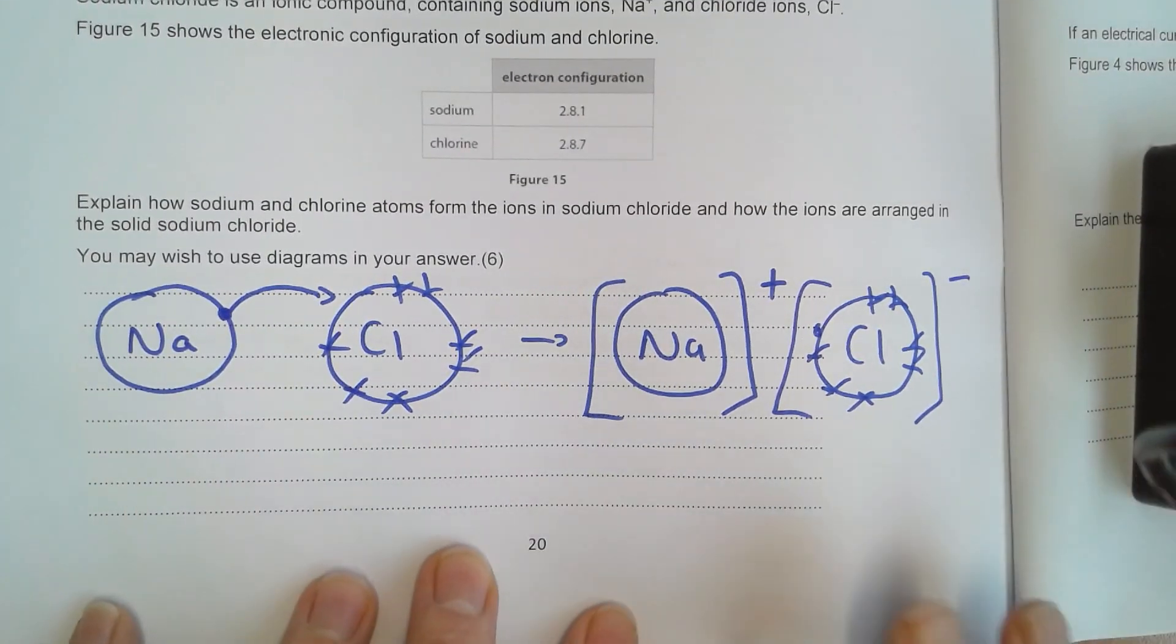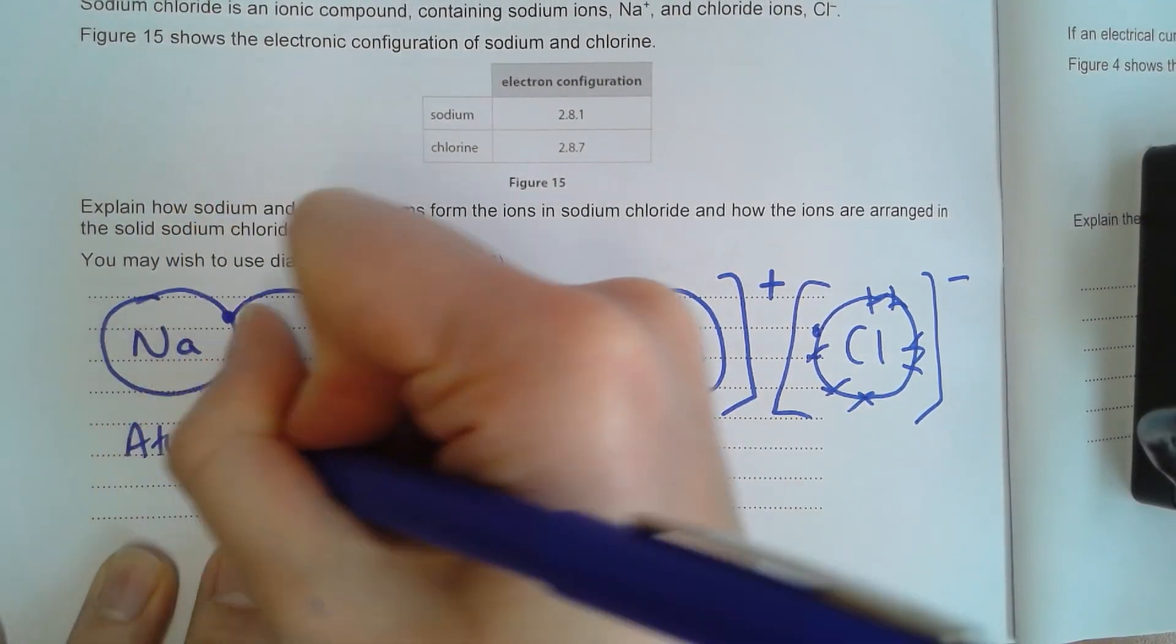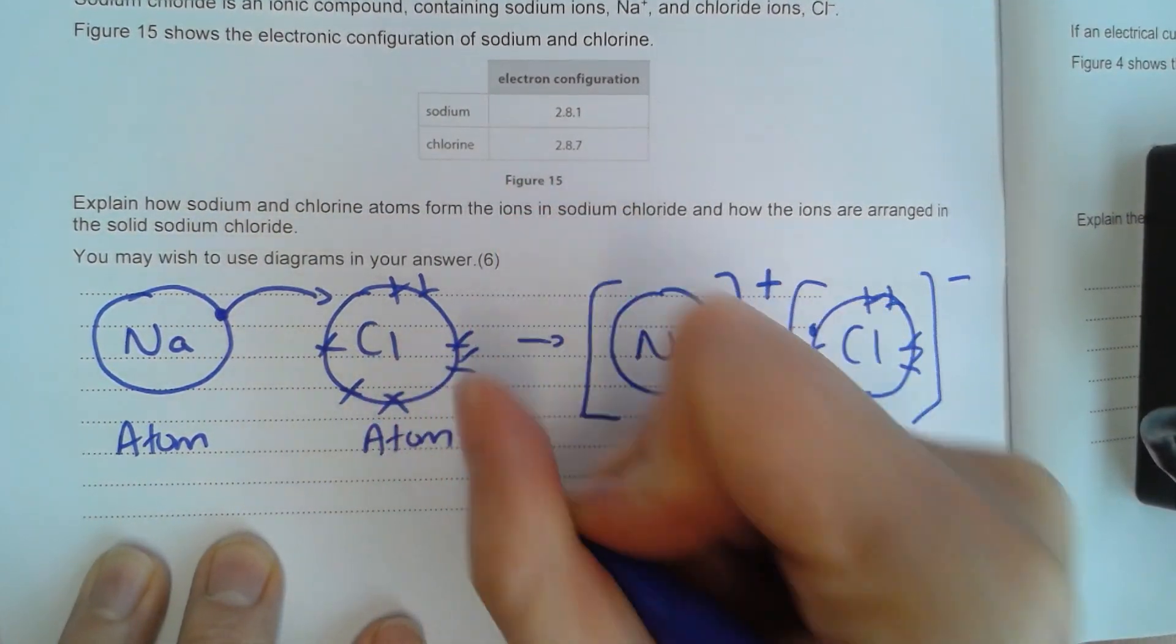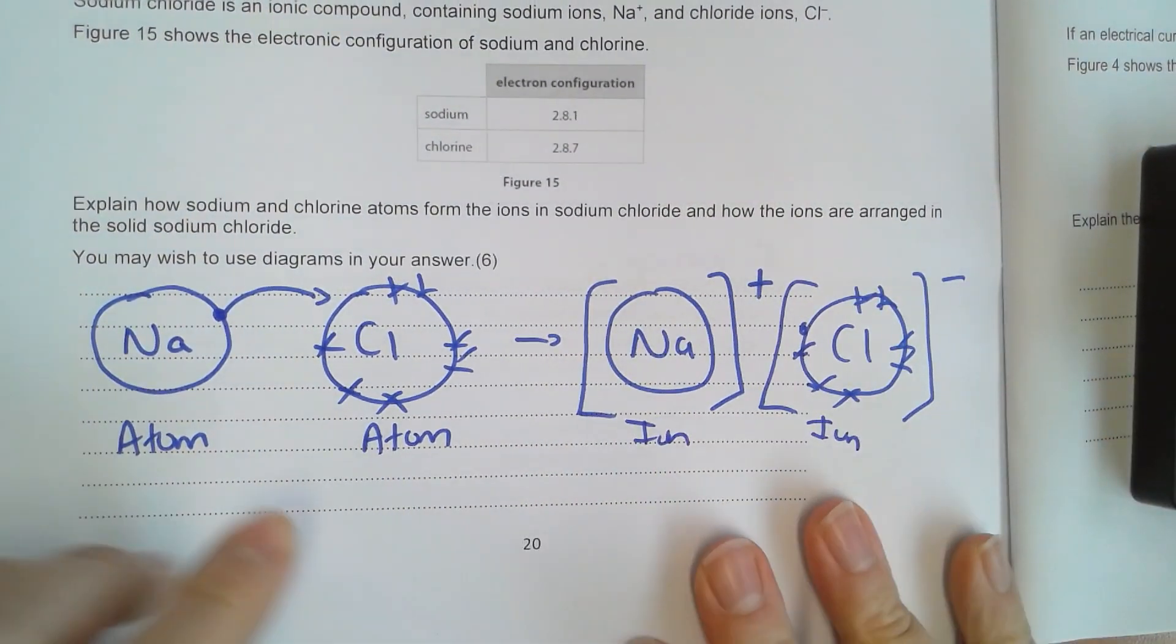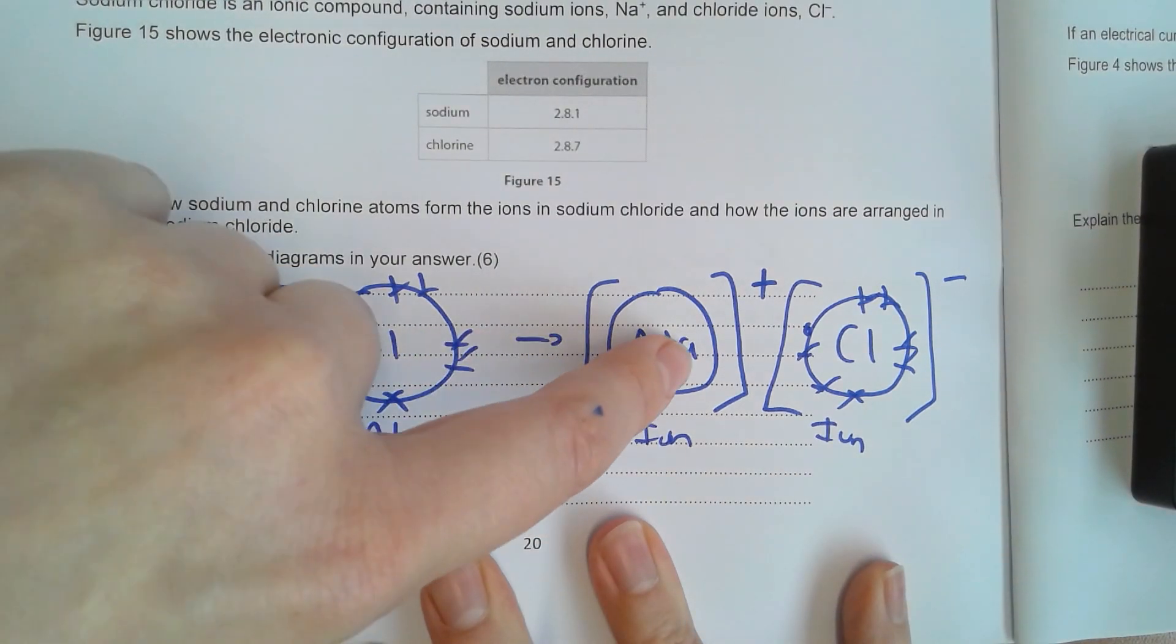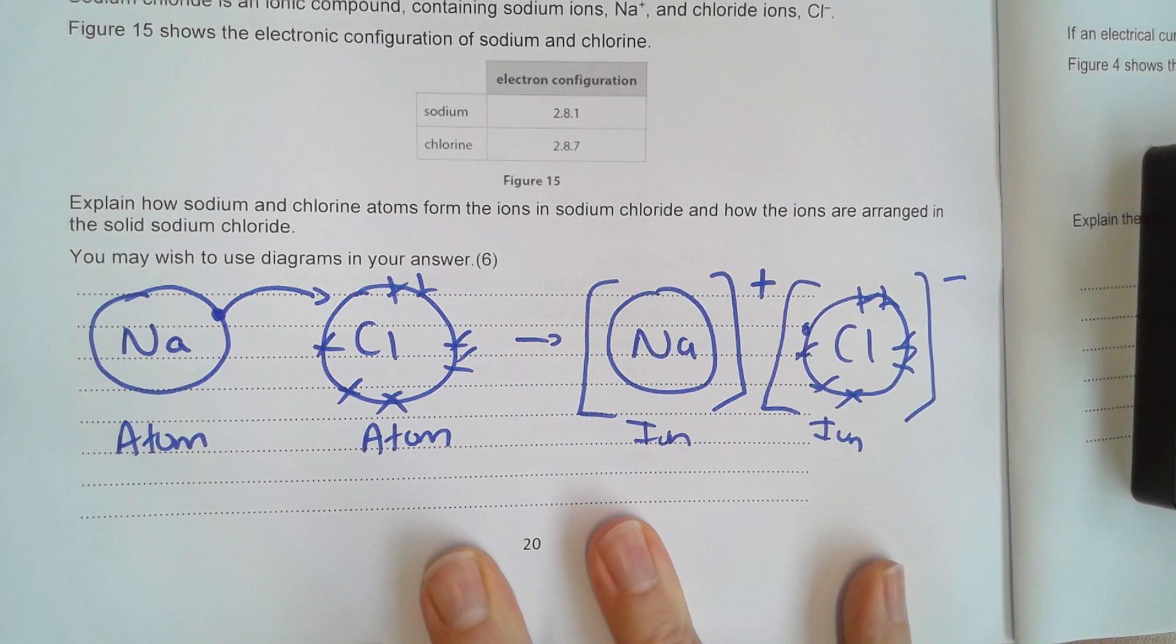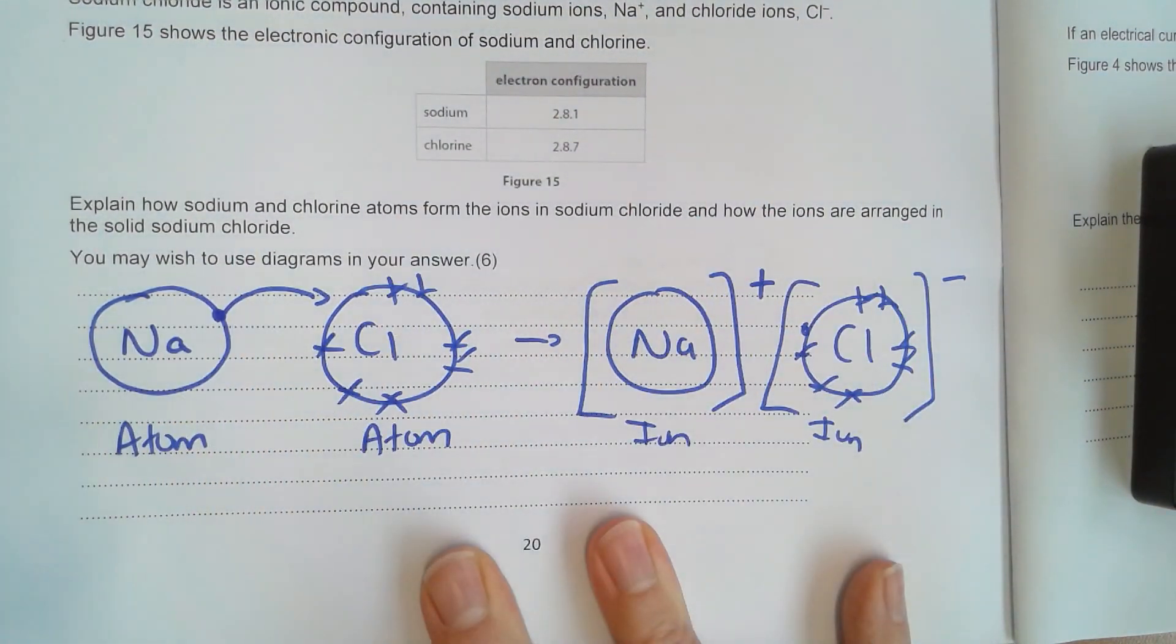So if we look at what we're being asked, how the atoms, which is what I've drawn here. So this would be a sodium atom and this would be a chlorine atom. How the atoms form the ions. This would be an ion. This would be an ion. So I'm showing that sodium transfers one electron to chlorine in order to form the ions. That is going to get me all of those marks and how the ions are arranged in the solid sodium chloride.